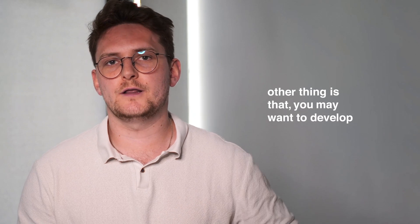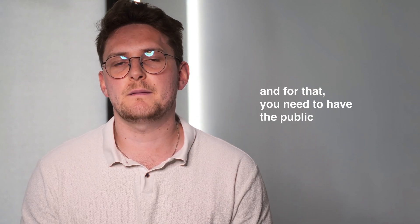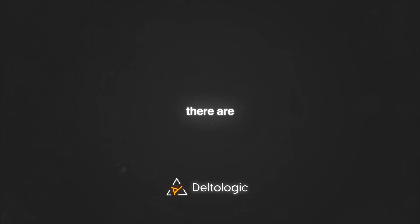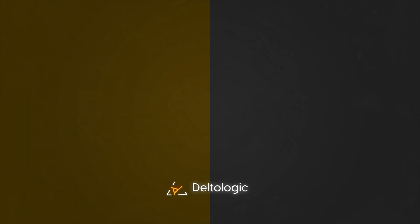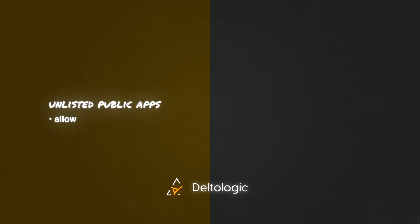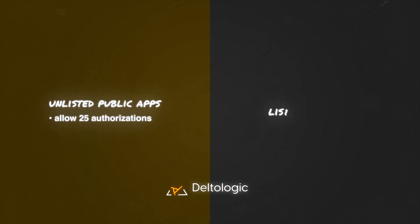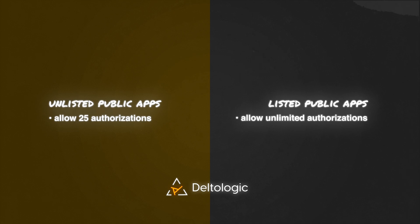The other thing is that you may want to develop a SaaS platform, and for that you need the public developer profile. There are also two types of public developer apps. You have public apps that are unlisted, which allows you to have 25 authorizations - perfect if you're building an MVP to test your app with the first users. Or you have a public listed app that goes to the Amazon App Store, where you can authorize as many sellers as you want.